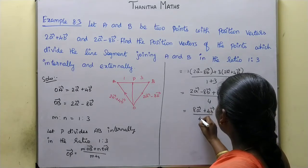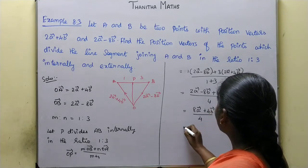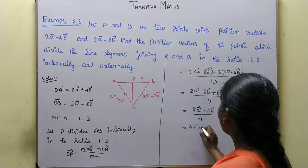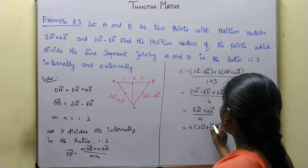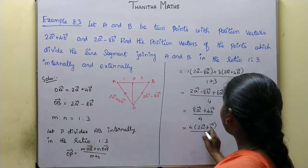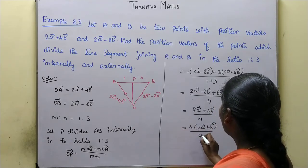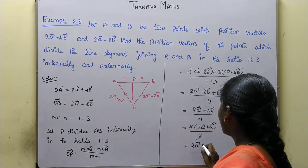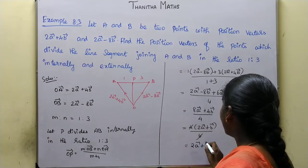So this simplifies to 8a vector plus 4b vector divided by 4. The 4 cancels, giving OP vector equals 2a vector plus b vector.